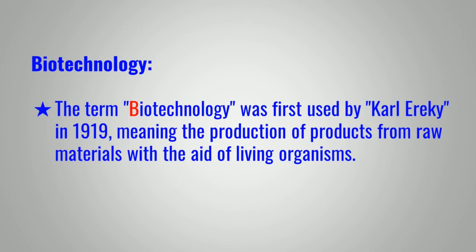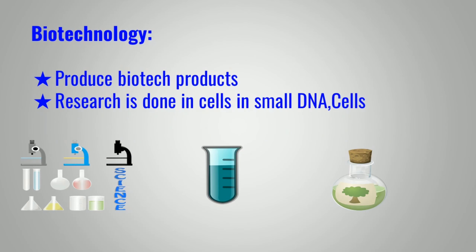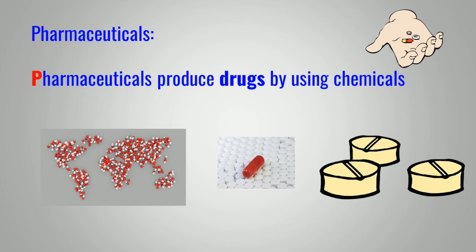The term was first used by Carl Erwig in 1919, meaning the production of products from raw materials with the aid of living organisms. Biotechnology produces biotech products through research done on cells and small DNA sequences in living cells. Pharmaceuticals, on the other hand, involves producing drugs by using chemicals — not using living cells.